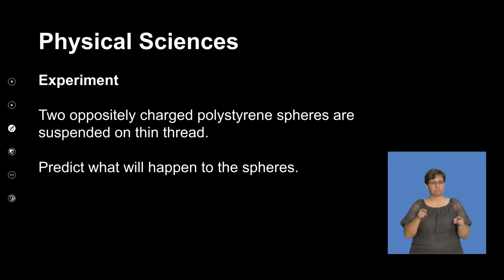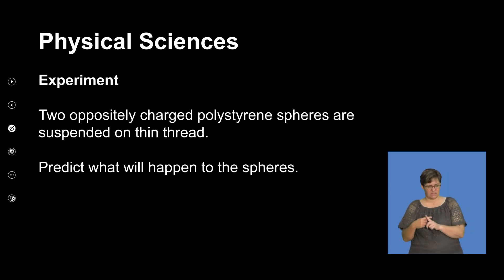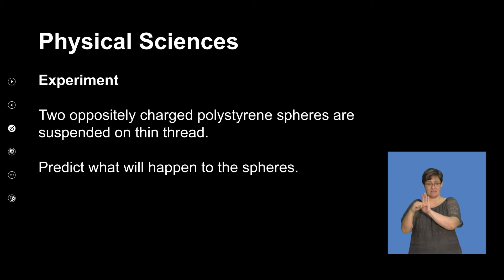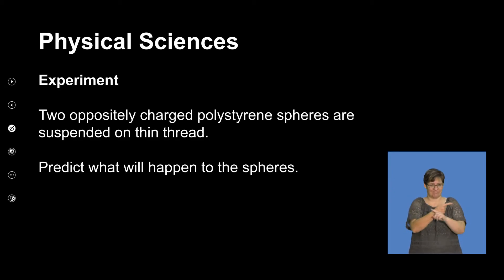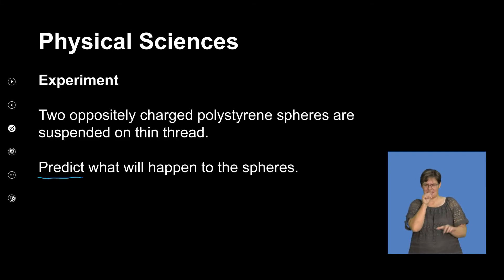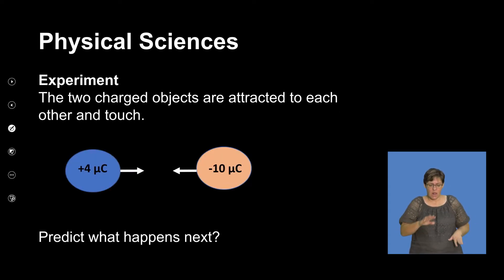We've got two oppositely charged polystyrene spheres — one is positive and one is negative. The thin thread does not allow charge to be transferred outside. So the total charge is between these two oppositely charged spheres. We want to understand what exactly happens in terms of charge during that physical process. These two charged objects are attracted to each other.